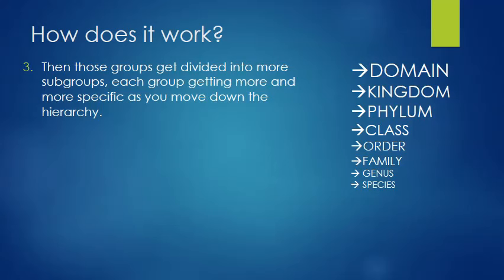Then we take those kingdoms and we keep going down. So we divide those kingdoms into a subgroup called a phylum. If domain's one, kingdom's two, then phylum is three. And then we take those phylums and we divide them up into classes. We take those classes and then we divide them into orders. We take the orders and divide them into families. Take the families, divide them into genuses. And then we divide the genuses into specific species.